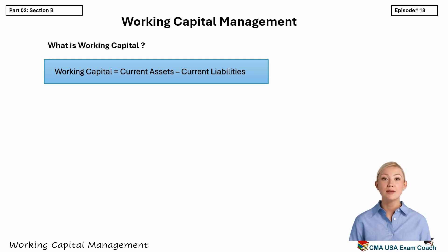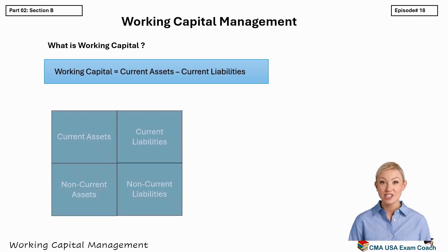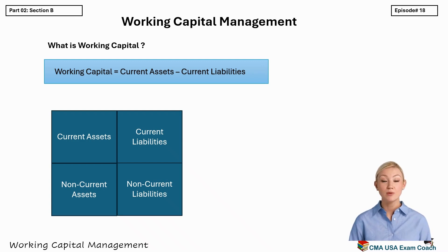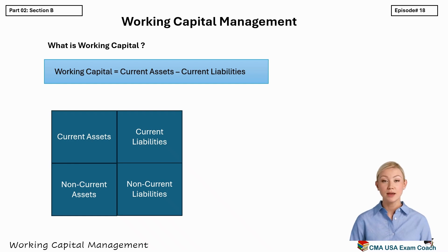Let's go one step deeper and look at the balance sheet layout. On the assets side, we have current assets like cash, inventory, and accounts receivable, and non-current assets like property, machinery, and long-term investments. On the liabilities and equity side, we have current liabilities such as accounts payable, wages payable, and other short-term obligations.